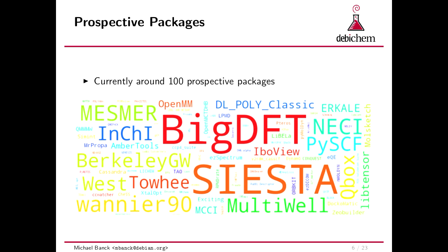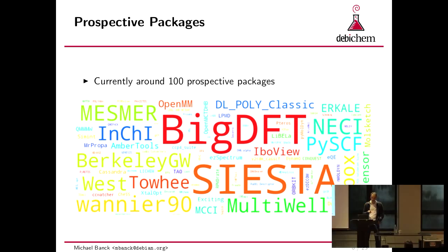There are a few really big ones: Siesta, for example, is a very well-known code in the periodic or crystal community which got open sourced a while ago — we should package it. BigDFT is pretty well-known, and PySCF. A couple of those really should be packaged, but we don't get around to it. There are at least 100 prospective packages we know of, so at least twice the size we already have.